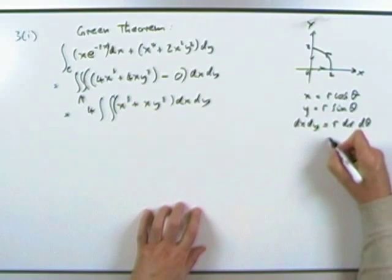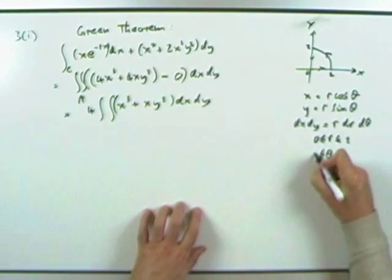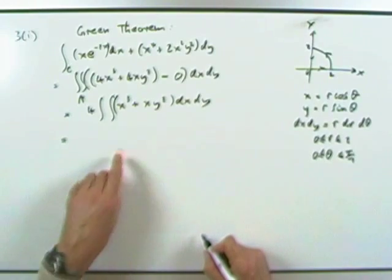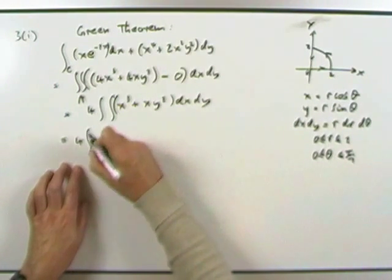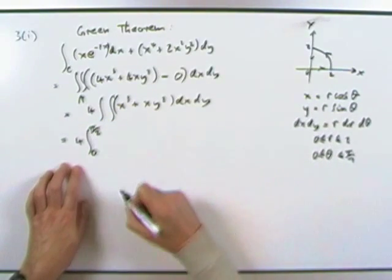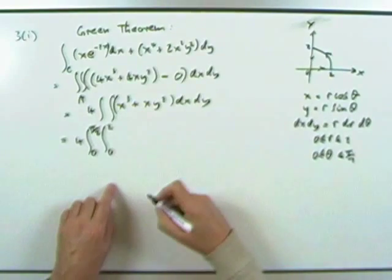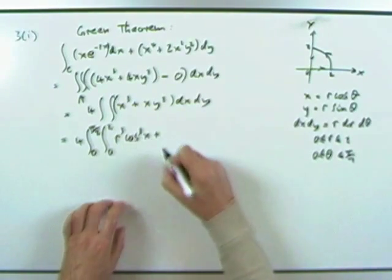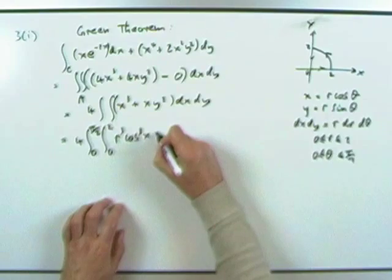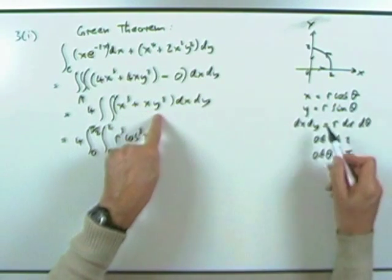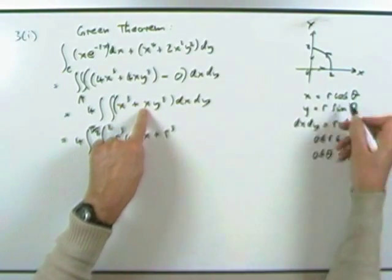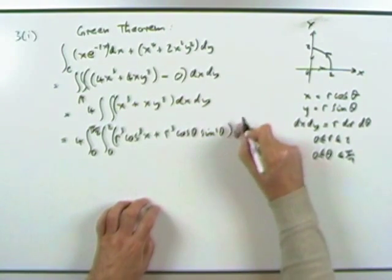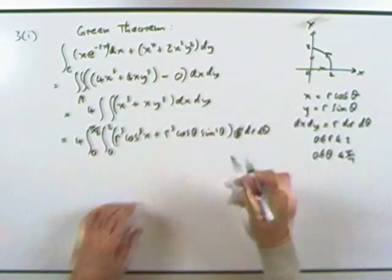Putting it all together: r goes from 0 to 2, θ goes from 0 to π/2. So x³ becomes r³ cos³θ, and xy² becomes r · r² cos θ sin²θ — that's r³ cos θ sin²θ — times the area element r dr dθ. So the full integrand is r⁴ times (cos³θ + cos θ sin²θ).